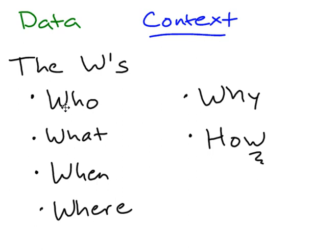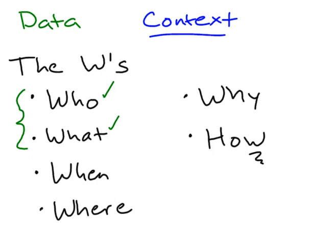These who, what, when, where, why, and how can give us the context of the data that we're looking at. The two most important W's are who and what. If you don't know the who and you do not know the what, then you cannot figure out what the context is.